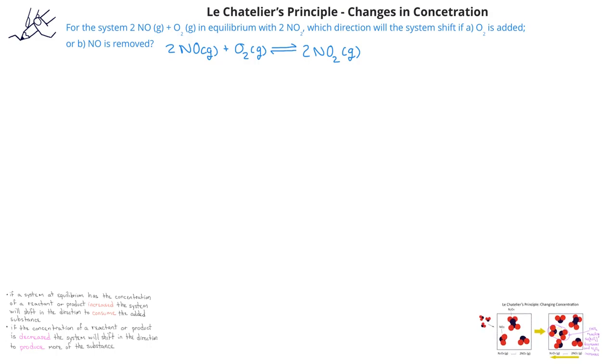Let's see if we can use what we just learned to make predictions. In this question, we're given the system two NO gas reacting with one mole of O2 gas to produce two moles of NO2 gas. And we're asked which direction will the system shift first if O2 is added or second if NO is removed.